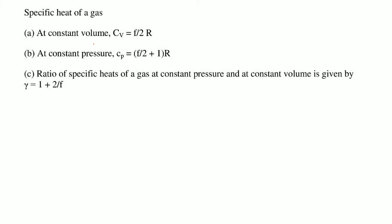Specific heat of a gas: at constant volume it is given by Cv = (F/2)R, and at constant pressure it is Cp = (F/2 + 1)R. The ratio of specific heats γ = Cp/Cv = 1 + 2/F.